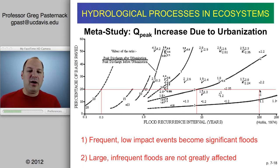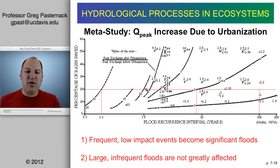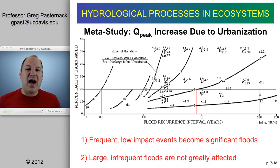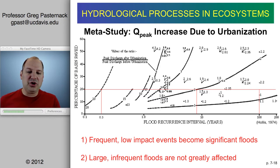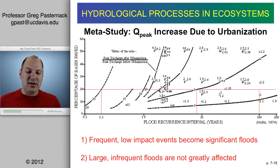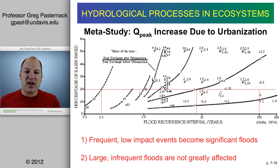From a policy perspective, it's not the largest floods where urbanization makes the biggest difference — it's mid-sized floods, events occurring every one to ten years, that we experience five to ten times in our lifetimes. If urbanization makes those events three times larger, as Espey found, that has a huge effect on flooding potential. This is a complex diagram — focus on the contour lines rather than the specific numbers.